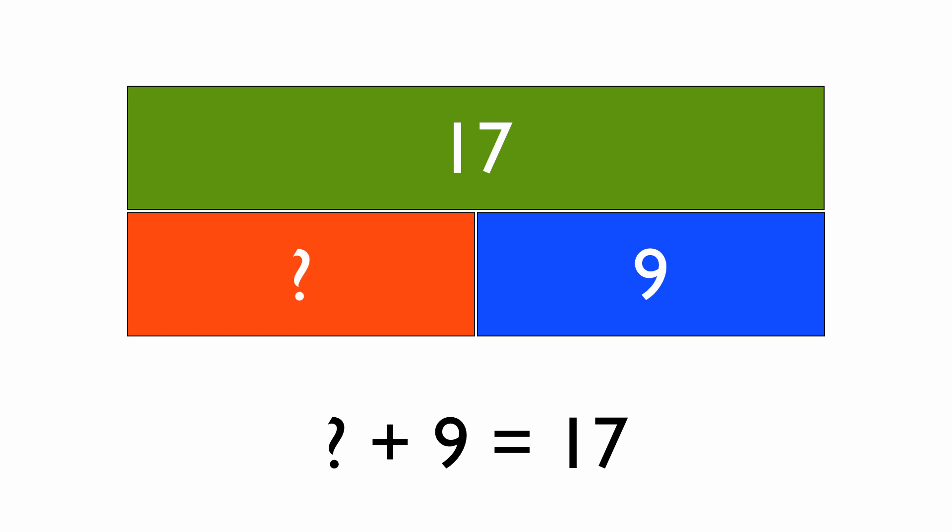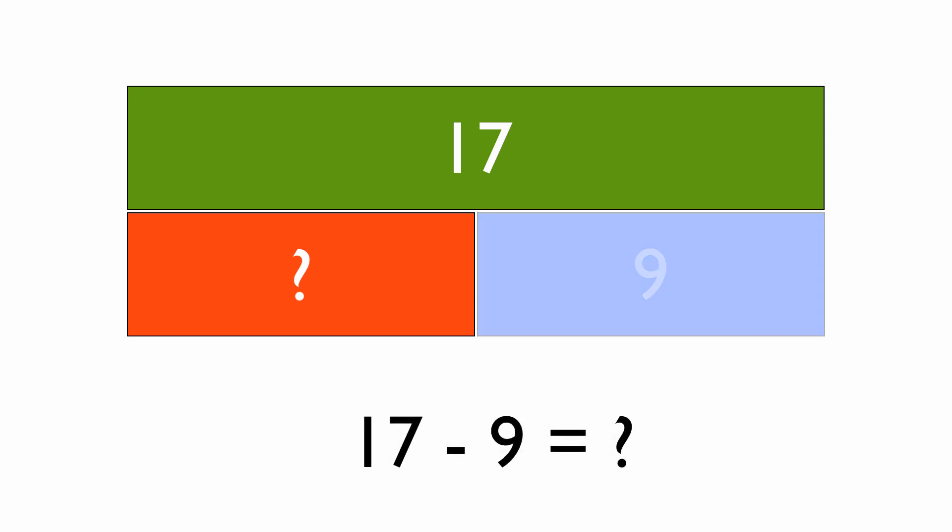The way we do this is by starting with the whole, 17, taking away the 9. And that'll leave us with the thing that we're looking for.